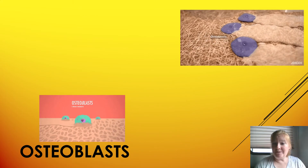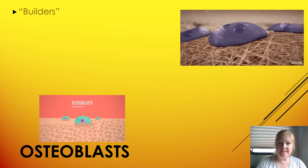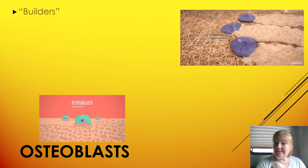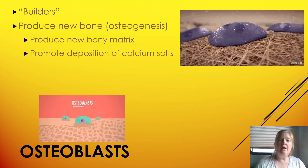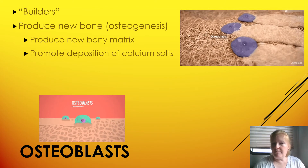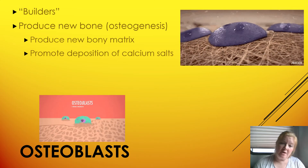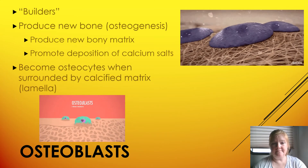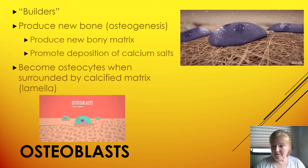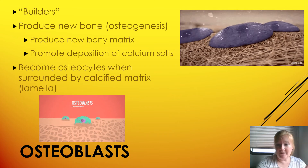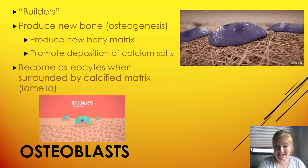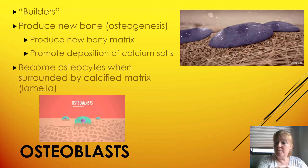Then we have osteoblasts — think 'blast, build.' They're the builders. They produce new bone in a process called osteogenesis. They produce a bony matrix and promote the deposition of calcium salts, so they can pull excess calcium. They become osteocytes when they get surrounded by the calcified matrix — the lamella. Essentially, osteoblasts are osteoblasts until they get trapped — like they got buried alive — and then they just become osteocytes, trapped in between layers of bony matrix.